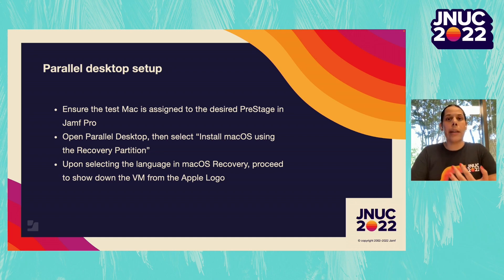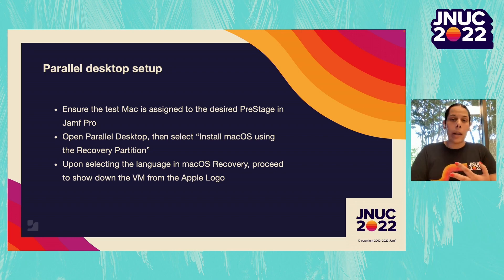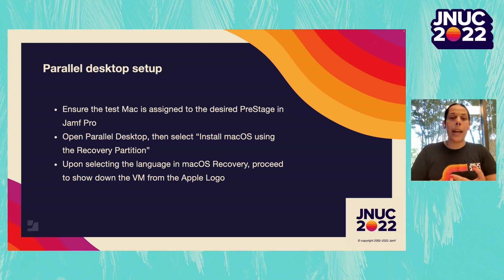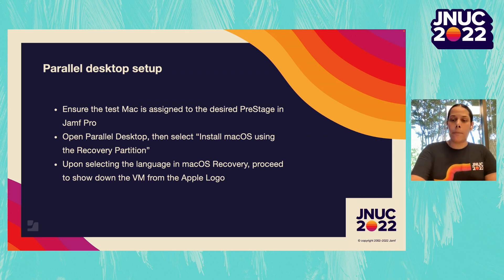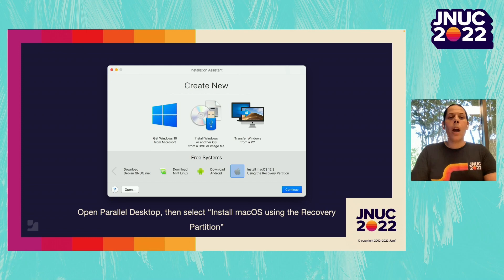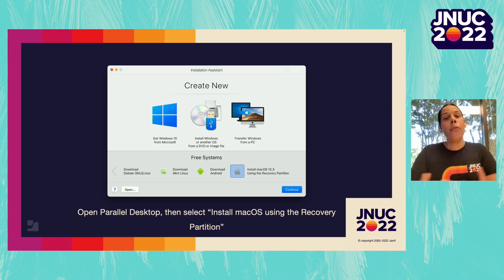First, we're in Parallels. You want to ensure that the Mac is assigned to the pre-stage you're going to test in Jamf Pro. You're going to open Parallels Desktop next and install macOS using the recovery partition. Once that has loaded, go ahead and turn off the VM. We use install macOS from the recovery partition — not the app installer from the App Store — because there are fewer errors when creating the bootable disk image with the application.